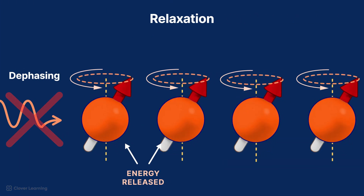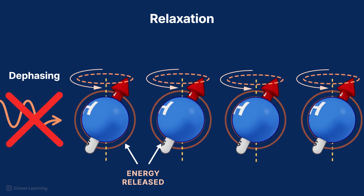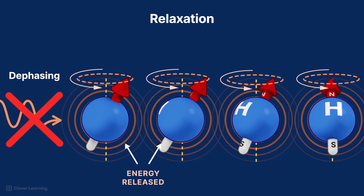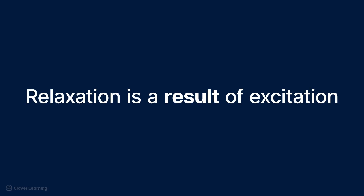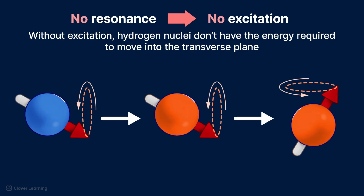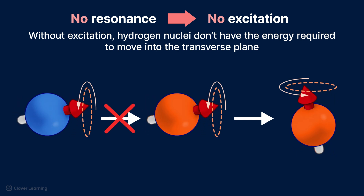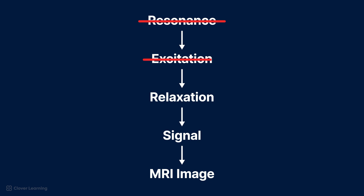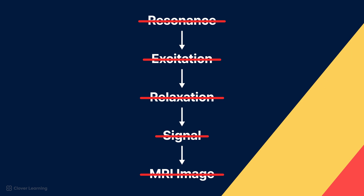When the RF excitation pulse is stopped, the hydrogen nuclei release the energy they absorbed and begin to dephase with one another. This is a process called relaxation. Relaxation will be discussed more in a different lesson, but it is important to note that relaxation is a result of excitation. If resonance does not occur, then excitation does not happen. Without excitation, the hydrogen nuclei do not have the energy required to move into the transverse plane. Without resonance, there is no excitation, there is no relaxation, there is no signal, and there is no MRI image.